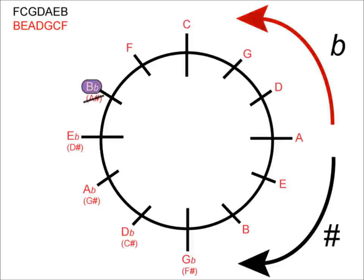Let's try a few examples. B flat minor — as there is a flat in its name, we know that we have to travel around the flat side of the circle. So we start at A and count around to B flat: D is one notch from A, G is two, C is three, F is four, B flat is five. Therefore we can say that B flat minor has five flats in its key signature.